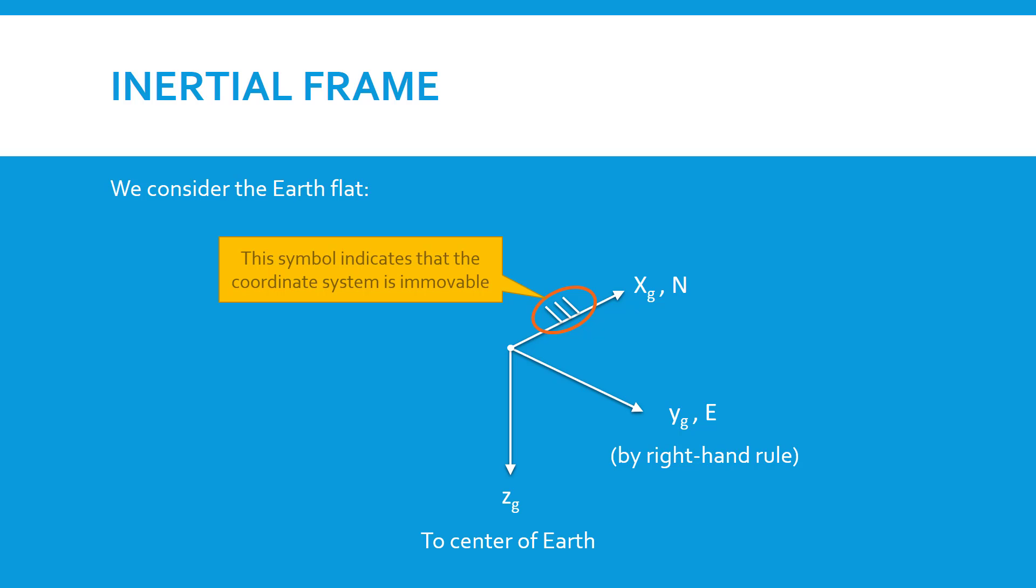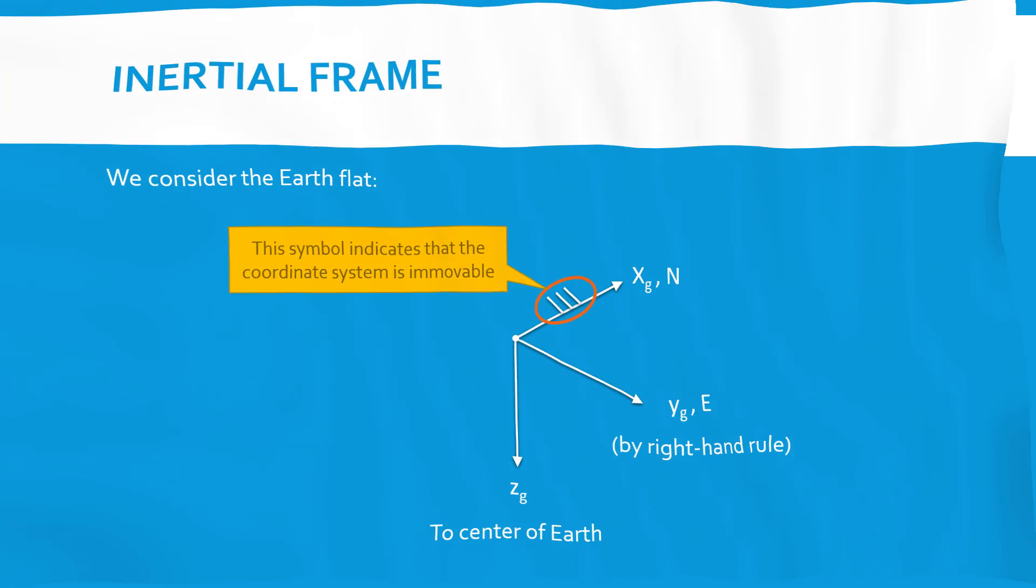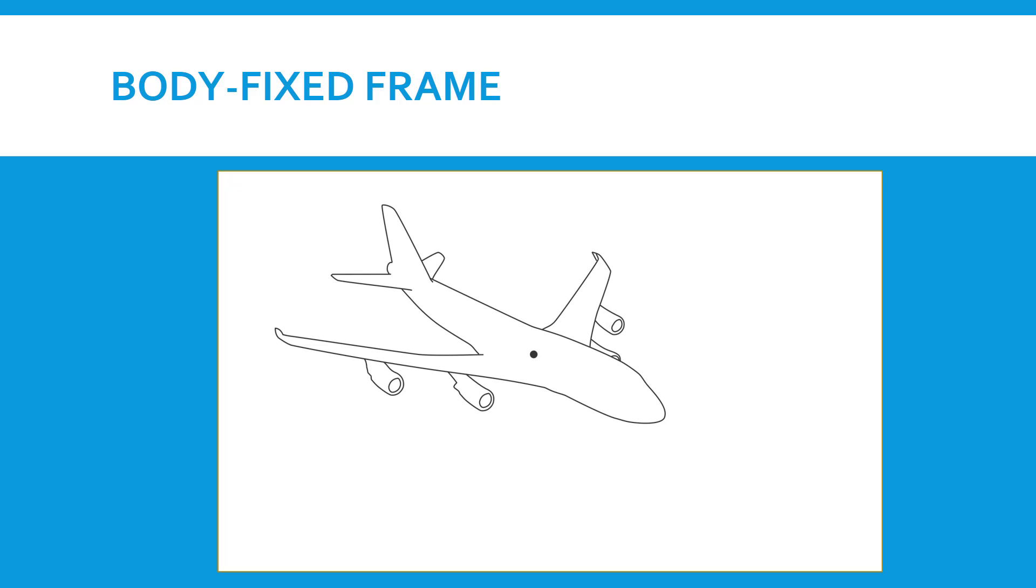Let's then look at the body-fixed frame. Here we see an aircraft in an isometric view. The dot in the center represents the center of mass of the airplane. The longitudinal axis of the airplane defines XB—B stands for body-fixed frame—so the X axis is just the longitudinal axis of the airplane.